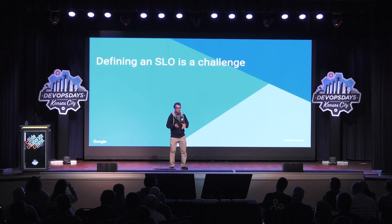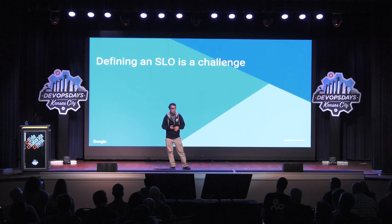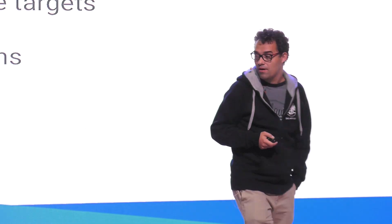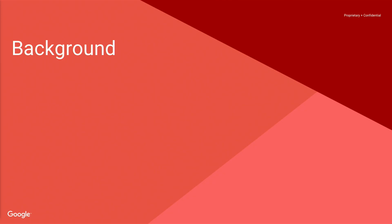When people think of SLOs, I think they think mostly of a target attached to a key metric of their service — something like error rate, availability, and latency. You might also think of error budgets and SLO-based alerting. But what we found is that figuring out what exactly the SLO should be based on, and what it should or shouldn't include, is a challenge in itself. I'll try to illustrate that today.